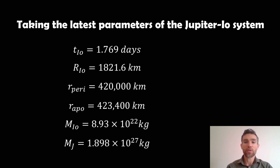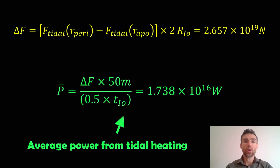Now, if we then take the latest parameters of the Jupiter Io system as these here, and also our value for d, we can then work out what that average power would be over half its orbital period or during this particular process, during the tidal stretching and squeezing and the tidal heating. So we put it all in, we end up with the variation in this force as approximately 2.657 times 10 to the 19 newtons. Putting that into the power equation, we end up with just over 1.7 times 10 to the 16 watts. And that would be the average power from the tidal heating of Io as it's on its elliptical orbit around Jupiter.